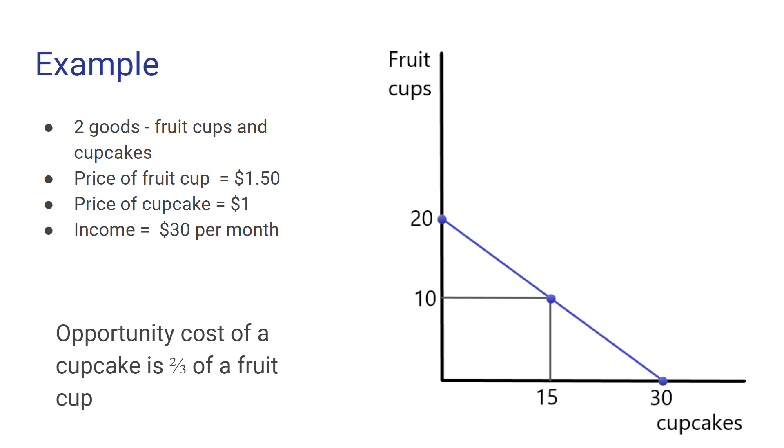And you can see with a little bit of logic that is correct because if you spend a dollar on a cupcake, you've given up two-thirds of the price of buying a fruit cup. If we want to measure the opportunity cost in the other direction, the opportunity cost of a fruit cup in terms of a cupcake, it's just going to be the reciprocal of that or one and a half. Because if we purchase one fruit cup, we've given up $1.50, which would be equivalent to what could have been used to purchase one and a half cupcakes.